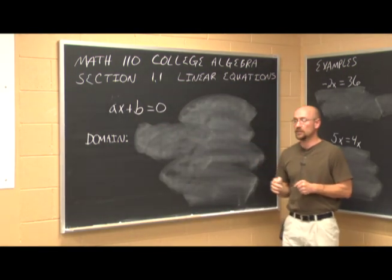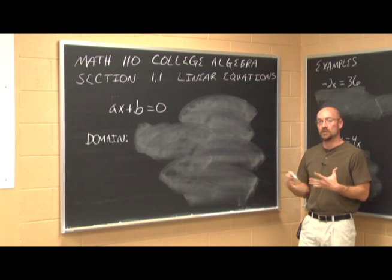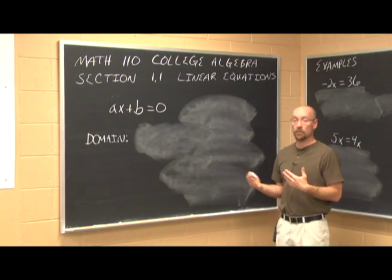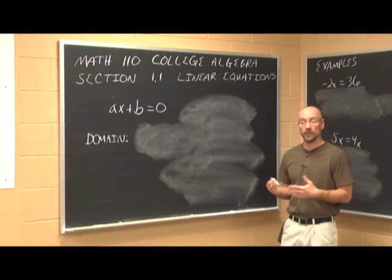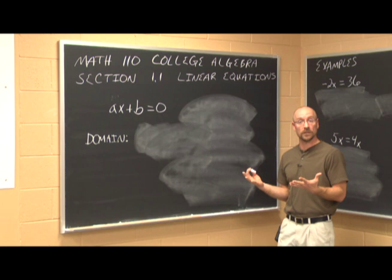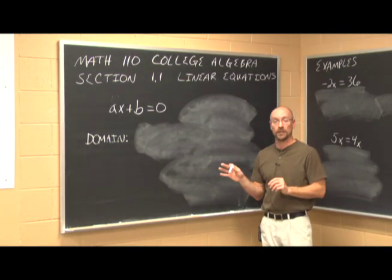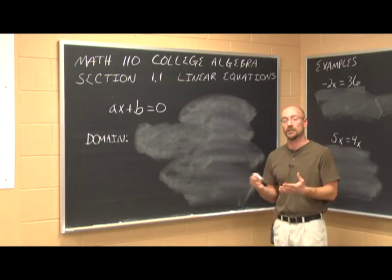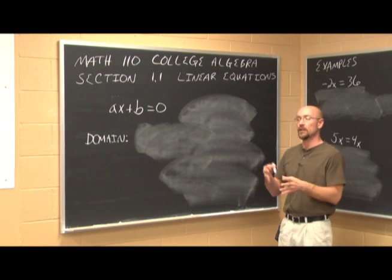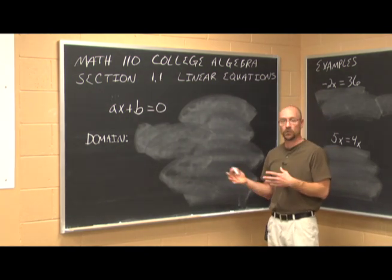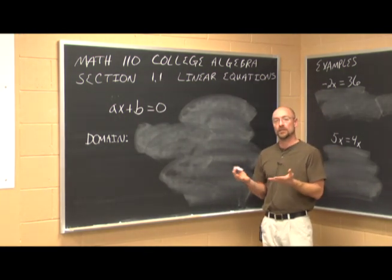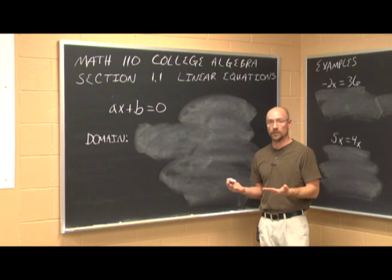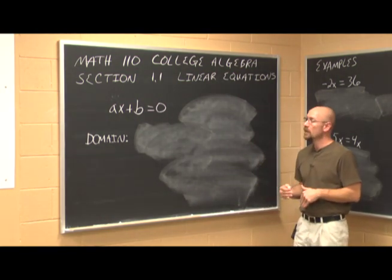When it comes to solving these equations, sometimes we'll want to simplify them using the properties of equality — essentially just saying what you do to one side, you do to the other. Maybe we want to clear parentheses using the distributive property, or use FOIL. We're essentially just making simpler, more simplified equations.